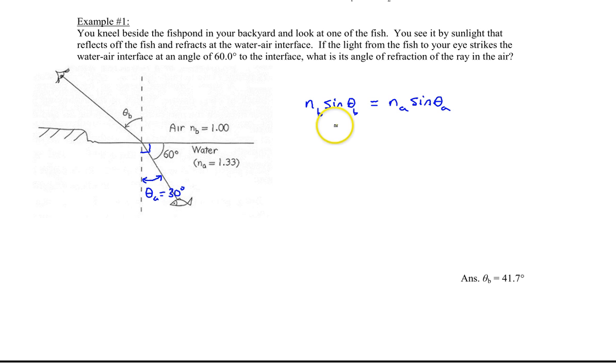Since we're solving for the angle theta b, let's rewrite this equation as sine theta b equals n sub a sine theta a all over the index of refraction for b in the air. Now all you need to do is substitute.